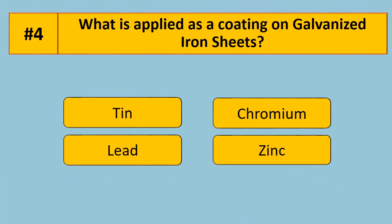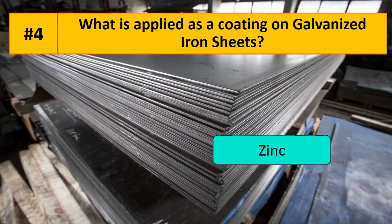Question 4. What is applied as a coating on galvanized iron sheets? When we apply zinc on iron sheets, they become galvanized iron sheets.